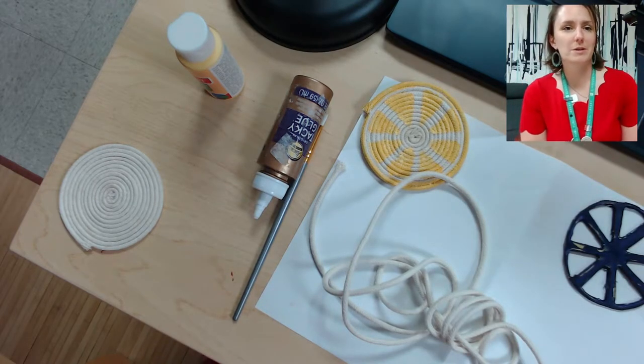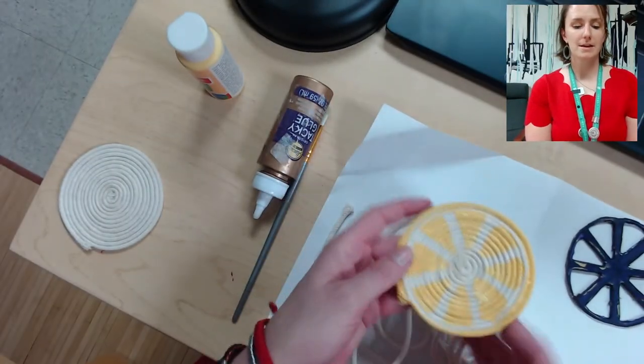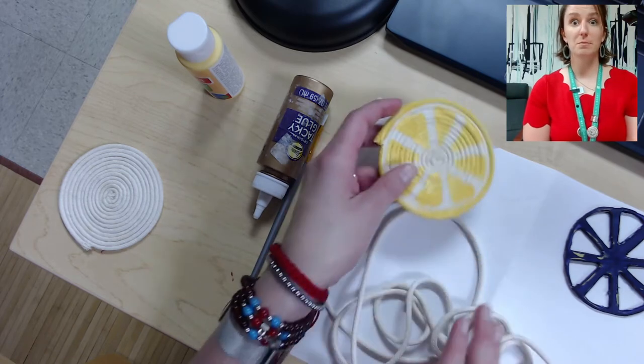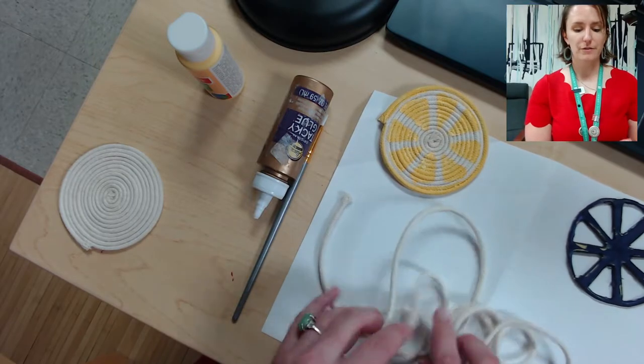Hi everyone, welcome to Adult DIY. This month we're going to be making a lemon slice coaster which looks like this. You have enough supplies in your kit to make four of those, so let's get started.